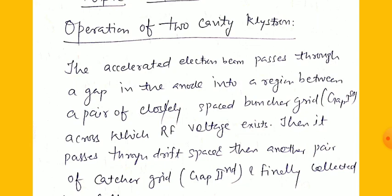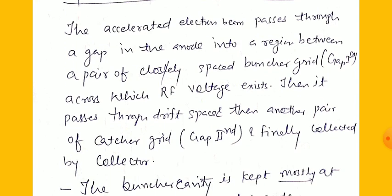The accelerated electron beam passes through a gap in the anode into a region between a pair of closely spaced buncher grids. Electrons produced by the electron gun pass through the buncher gate, across which an RF voltage exists. The beam then passes through the drift space and then another pair of catcher grids, and is finally collected by the collector.